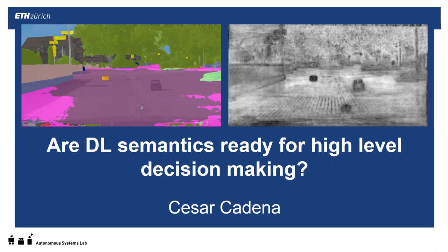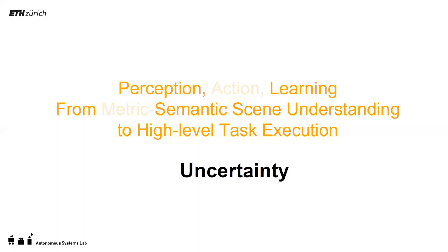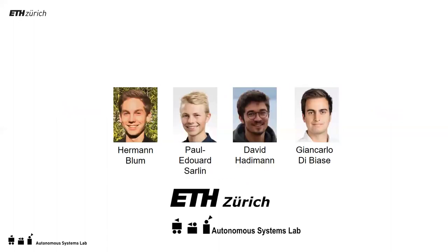My name is Cesar Cadena. To set up the talk in terms of what we are expecting in the workshop, I will talk about learning for perception, and focus on semantics in understanding and, in my view, what is needed — some basic requirements for really having high-level task execution. The key word I want to highlight, the one to remember, is uncertainty, and this talk is centered around that key word. I want to thank my students who have developed most of the techniques we are going to present. Mainly, Hermann has been leading this research in his PhD with the help of several master's students.